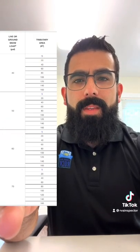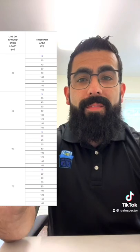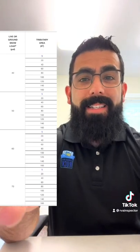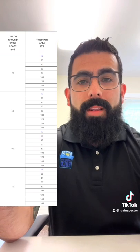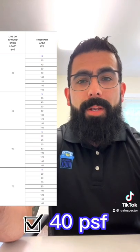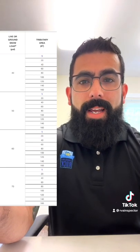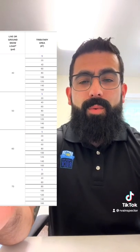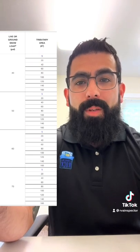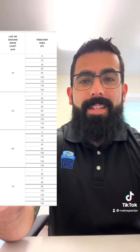The first column is the live or ground snow load. You're going to use whichever is greater and then add it to the dead load. So the typical live load for a deck is 40 pounds per square foot, and the snow load in my area is 20 pounds per square foot. So we're going to use the greater, which is 40, and then add it to the dead load.